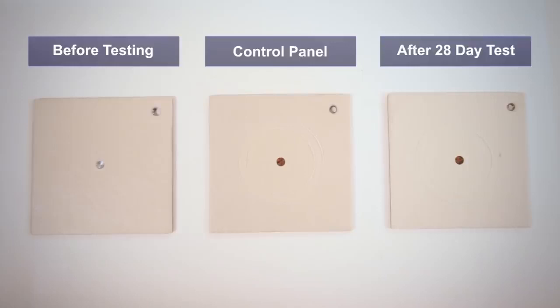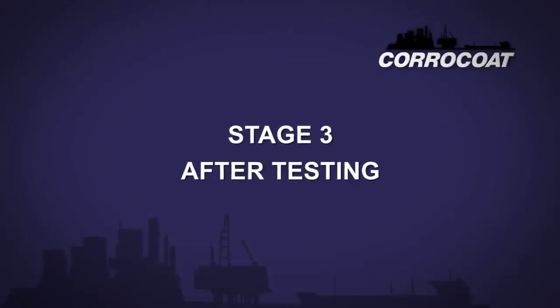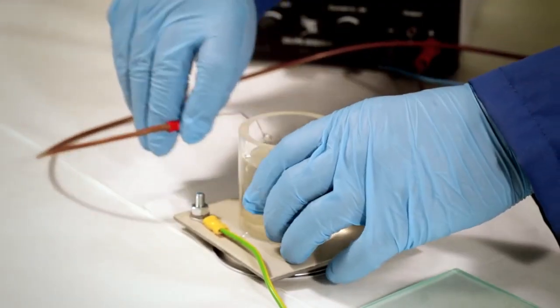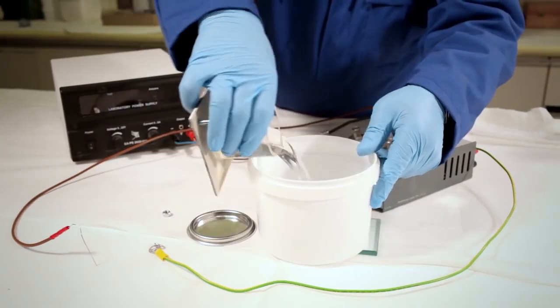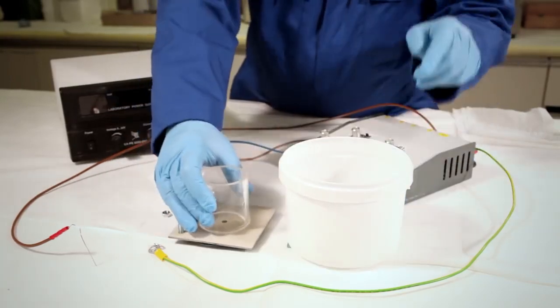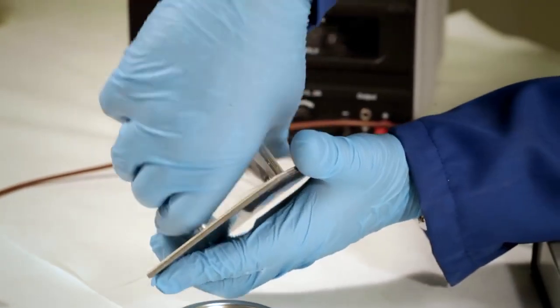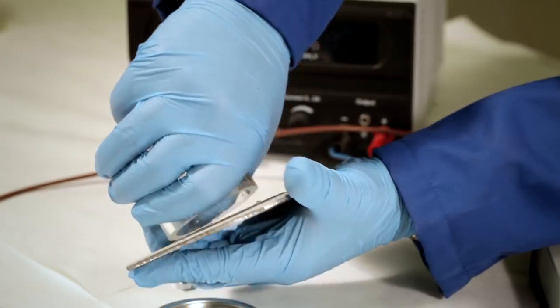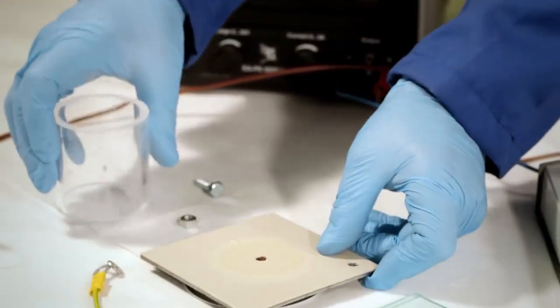The test is continued for 28 days or longer where previous test results have shown little indication at this period given good test results. The electrical connections are removed and the electrolyte poured out. The coating is then inspected. The plastic tube is detached and the panel rinsed in fresh water before being dried with a lint-free cloth.